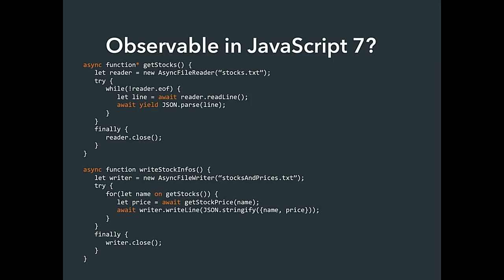This is something we're driving towards for JavaScript 7 — not yet accepted — but it would be great to have native support for Observable. For those unfamiliar with async/await in JavaScript 7, it makes async programming look synchronous. This is the type of code you might write in JavaScript 7 to natively work with observables using a new for-on loop.